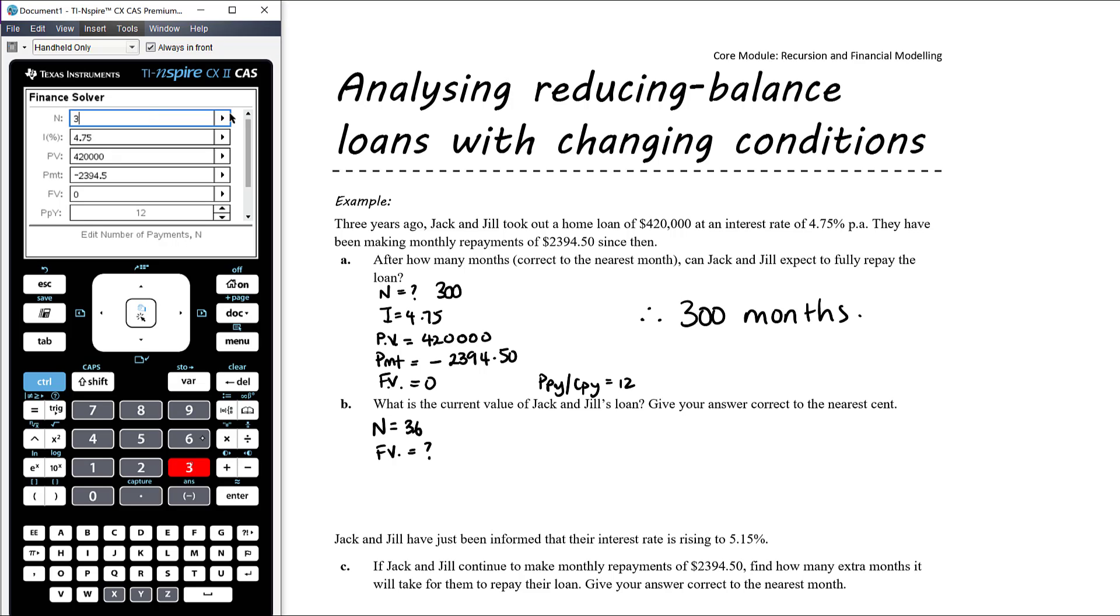Okay, so I'm going to change n to 36 and work out what that means for the future value. Okay, and so the future value is negative 391737.94 and so therefore Jack and Jill still owe 391737.94. So that's the current value of their loan.